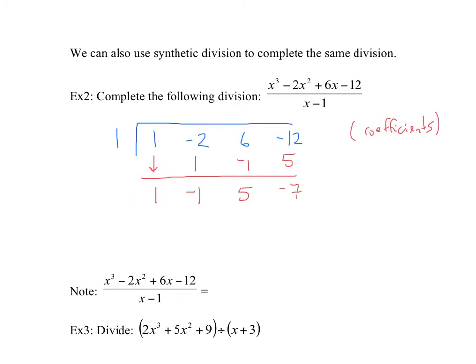Notice this is the exact same result as the long division. These values are the coefficients of the answer, so we have 1x squared minus 1x plus 5. Since you divided by x, the answer is one degree lower. The negative 7 is the remainder, matching the long division. So dividing by x minus 1 gives x squared minus x plus 5 with a remainder of negative 7 over x minus 1.